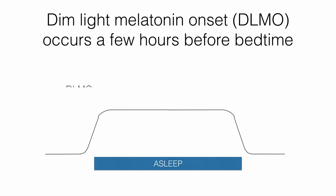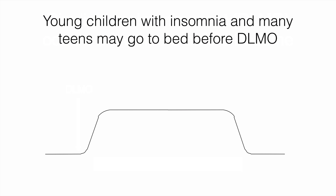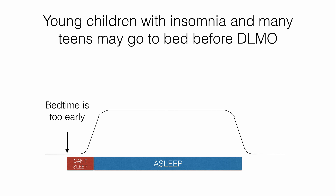When it starts to rise, it's called the dim light melatonin onset, and you can detect this in blood or in saliva. The reason this matters is that in some young children with insomnia or difficulty falling asleep, and many teenagers, they may actually be trying to go to bed before they have their dim light melatonin onset. So their bedtime is too early, and they have a period of difficulty falling asleep until they eventually fall asleep a few hours after their dim light melatonin onset.